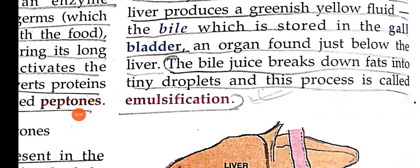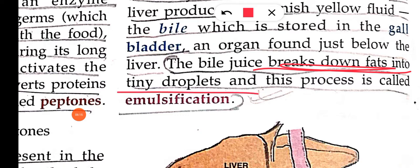The bile juices break down fats into tiny droplets. The fat you get from oil, ghee, butter, and milk is converted into small droplets, and this process is called emulsification. So emulsification is the process in which bile juices convert fat into small droplets.